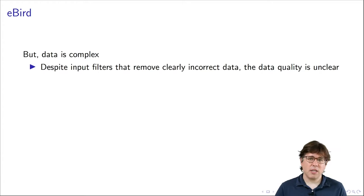eBird may sound exciting — we have all these volunteers contributing data and we're able to use it for scientific research — but the data is pretty complex. Despite a bunch of input filters, the data quality is unclear. For example, if you lived in New Jersey in the summer and submitted a bald eagle sighting on eBird, that would be flagged because bald eagles don't live there. Before any volunteer-uploaded data gets into the database, it goes through rigorous quality checks. But even so, it's hard for volunteers to correctly identify certain birds from a distance.